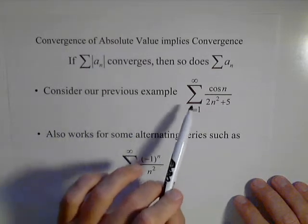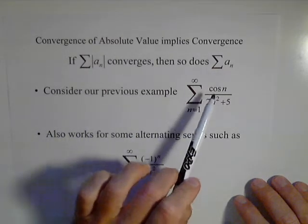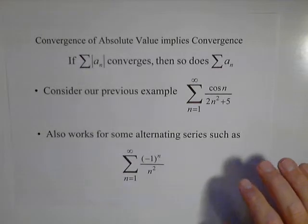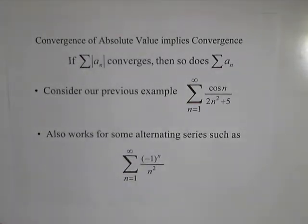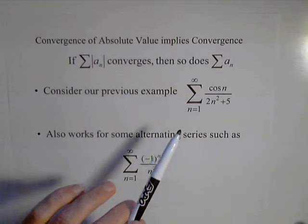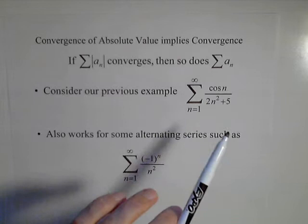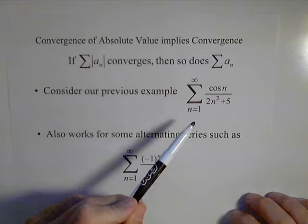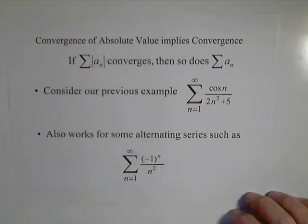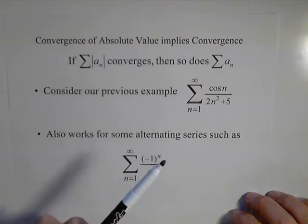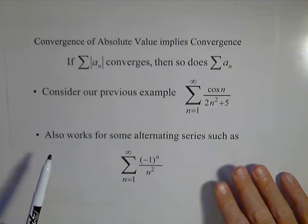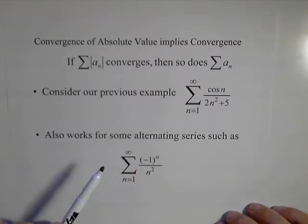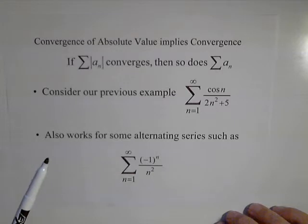The example I gave in the previous video was cosine(n) over (2n² + 5). We were looking at that with the limit comparison test, and what we found is that it didn't qualify because all its terms were not positive — every so often it has negative terms because it's oscillating. We're also going to look at alternating series, one where this test works and one where it doesn't.